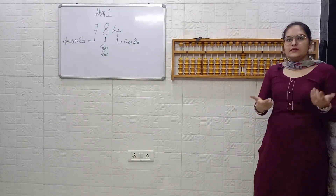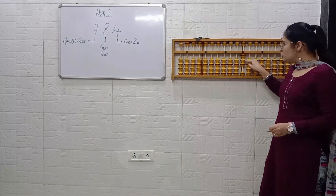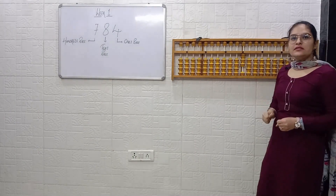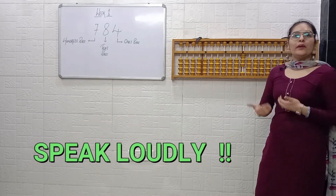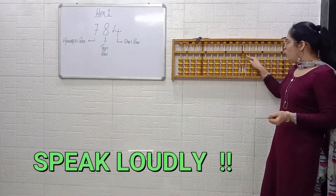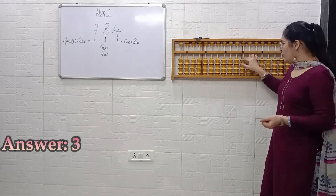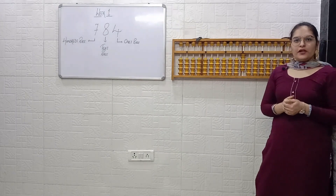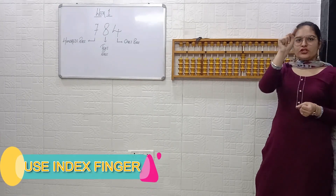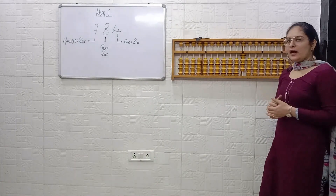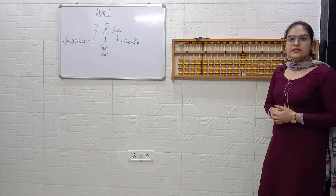Next — tell me the answer. Use your index finger, touch it on the screen and count: 1, 2, 3. Answer is 3. Next example: 1, 2, 3, 4. Answer is 4. The way I am reading the beads loudly and touching them, you have to do it in the same way. The louder you say it, the quicker you can give the answer.